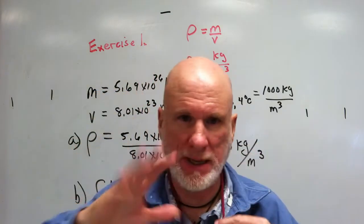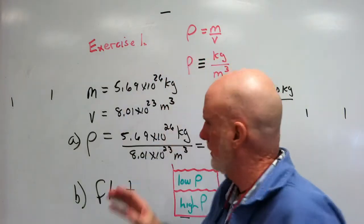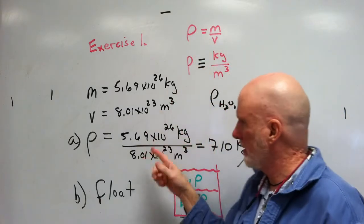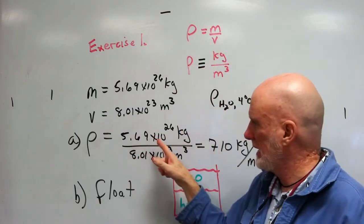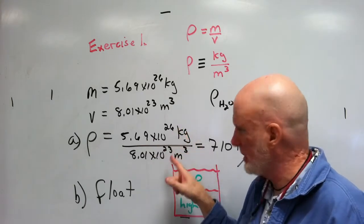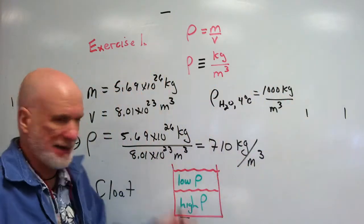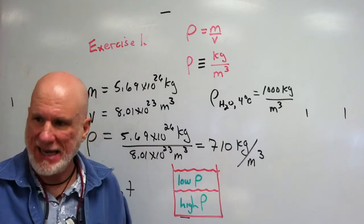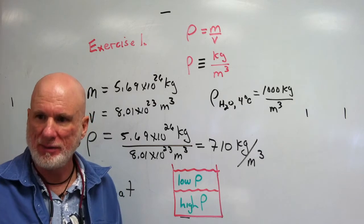Okay everybody, got it? Very quickly, right. Simply plug in to this equation: mass over volume. 5.69 times 10 to the 26th kilograms divided by 8.01 times 10 to the 23rd cubic meters equals 710 kilograms per cubic meter. Easy.